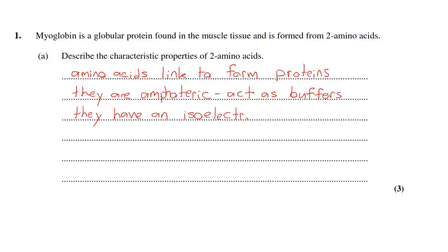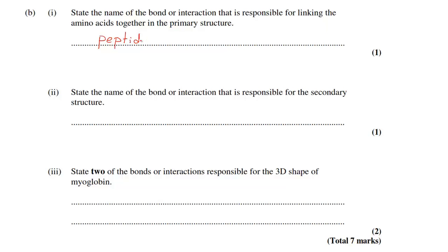Amino acids are linked in the primary structure by a peptide bond. In the secondary structure it's hydrogen bonding, and in the tertiary structure I have chosen ionic bonds and van der Waals forces.